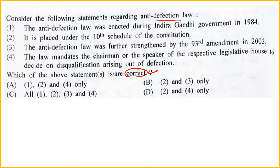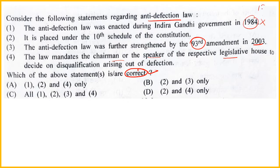Statement 1: Anti-defection law was enacted during Indira Gandhi government in 1984. Statement 2: It is placed under the 10th Schedule of the Constitution. Statement 3: Anti-defection law was further strengthened by the 93rd Amendment. Statement 4: The law mandates the Chairman or Speaker of the respective legislative house to decide disqualification. Ab dekhte hain - 1984 mein nahi aaya, 1985 mein aaya, aur Indira Gandhi ji ki death ho chuki thi tab tak, toh Statement 1 galat hai.